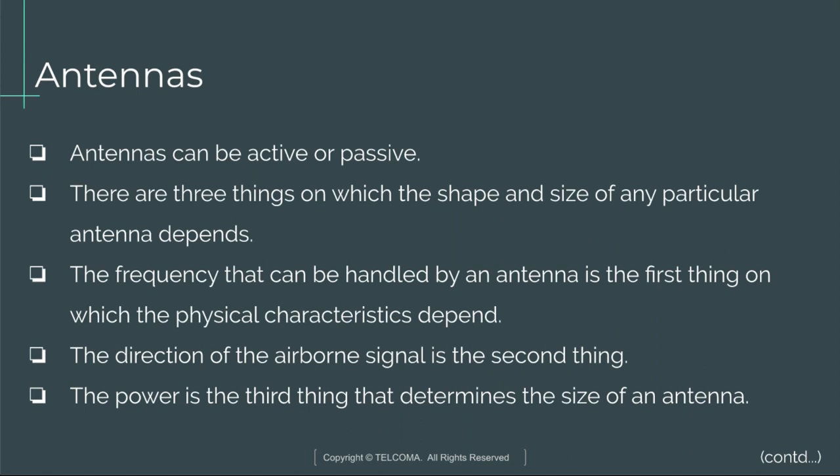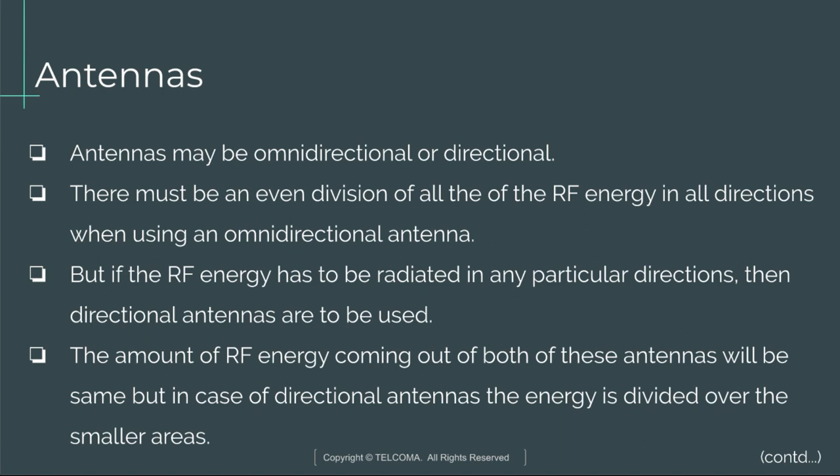There are three things on which the shape and size of any particular antenna depends. First, the frequency that can be handled by an antenna determines its physical characteristics. Second, the direction of the airborne signal. Third, the power is the third factor that determines the size of an antenna.